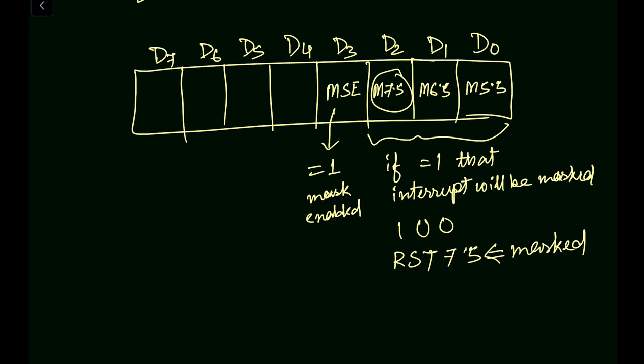Next, in the D4, we have R7.5. 7.5 here means this is the RST 7.5. This means R7.5 means we have to reset the RST 7.5 if this bit equal to 1.